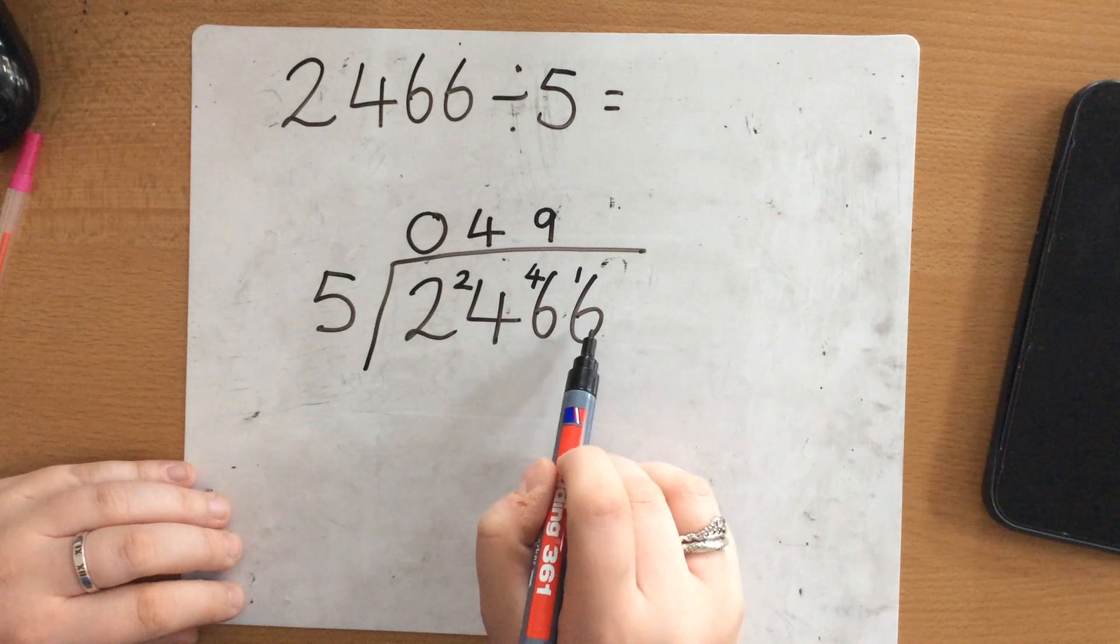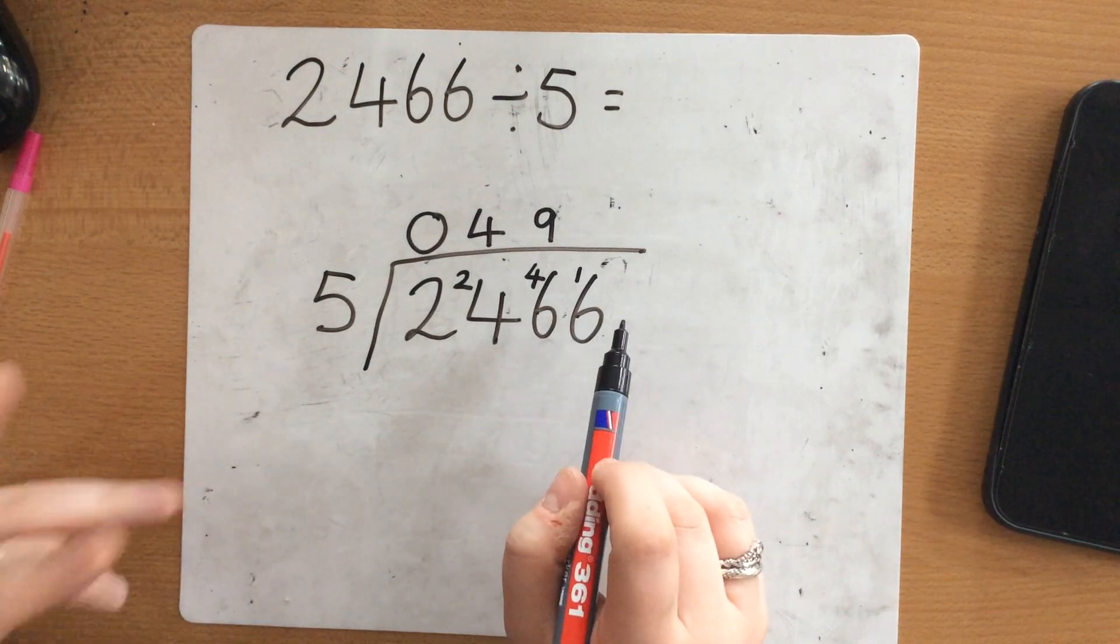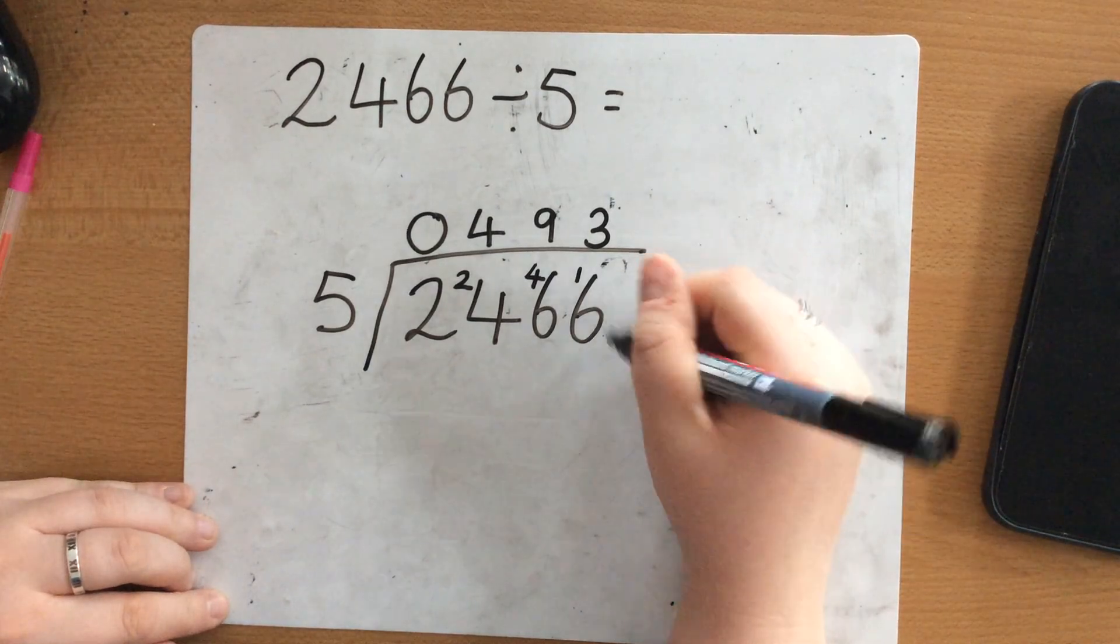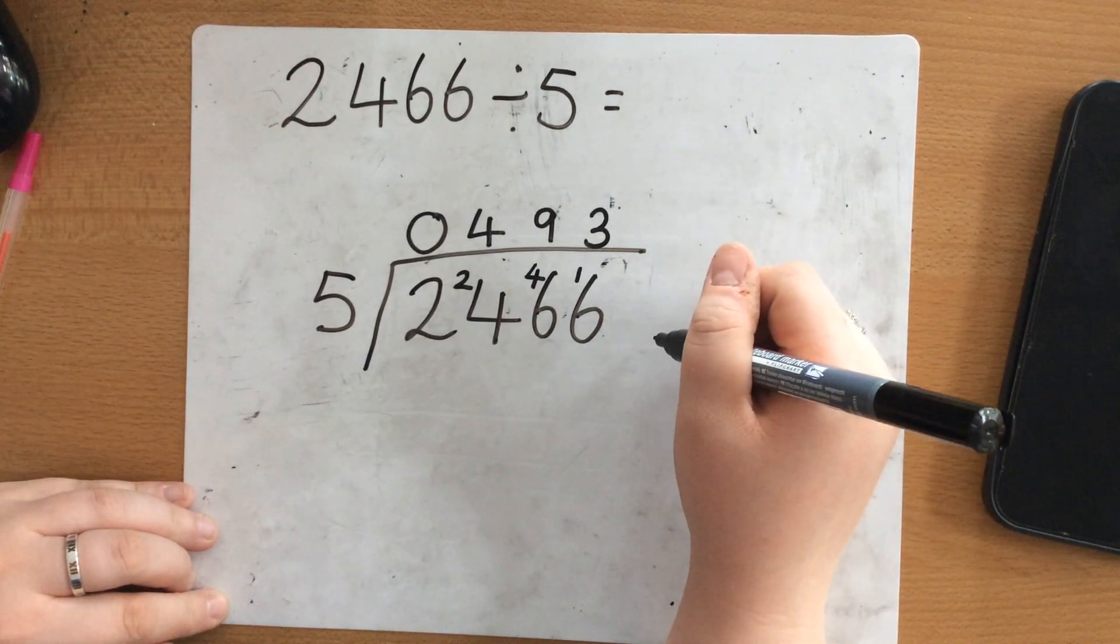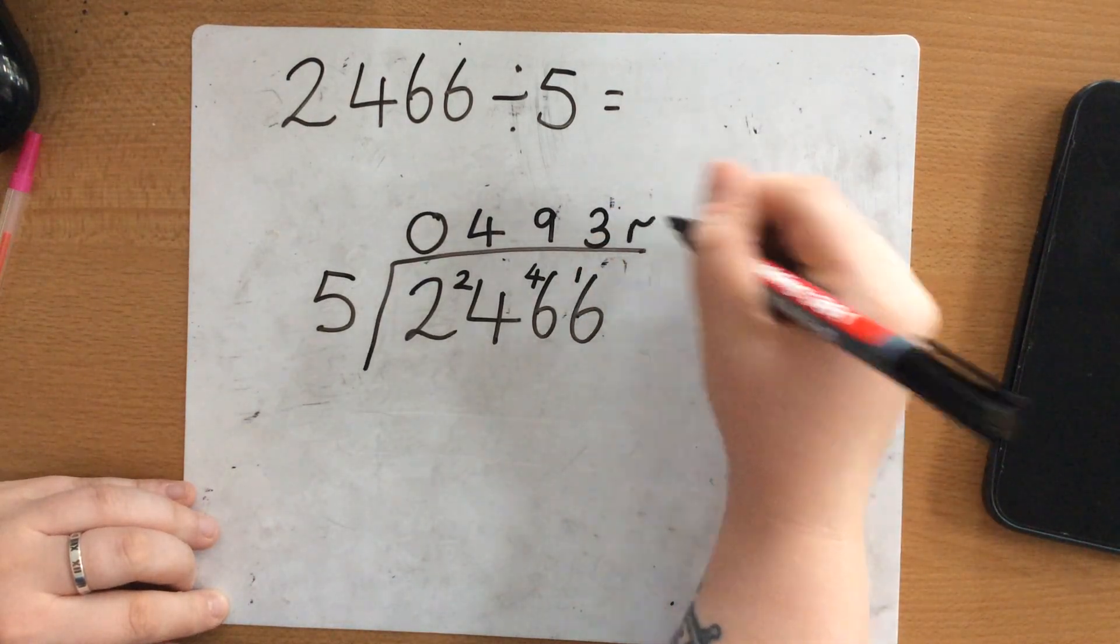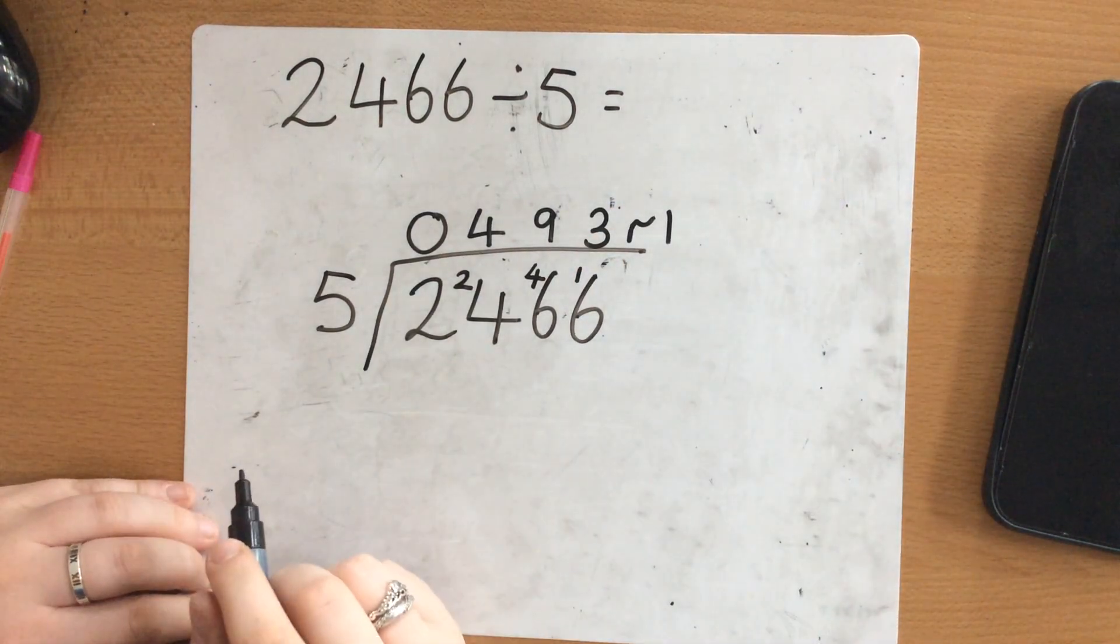So how many 5's go into 16? Well 5, 10, 15. They can go 3 times. There's no more numbers to carry my remainder over to. So I got to 15 and I was trying to get to 16. So that means I have a remainder of 1.